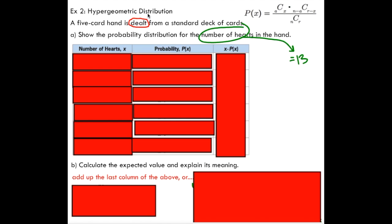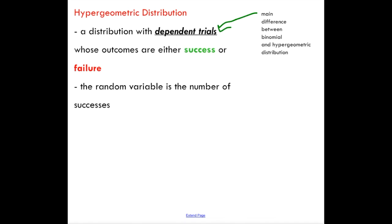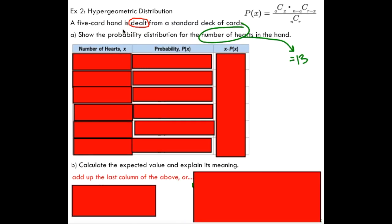Another example here, a five card hand is dealt from a standard deck of cards. This word dealt is your key to understanding that you actually have dependent trials unlike binomial distribution. Remember if I deal one card the probabilities change for the remainder of the deck that I'm dealing. So this is a dependent situation therefore you can conclude that it's a hypergeometric distribution. That's the line of thought you want to be using as you're reading these problems.